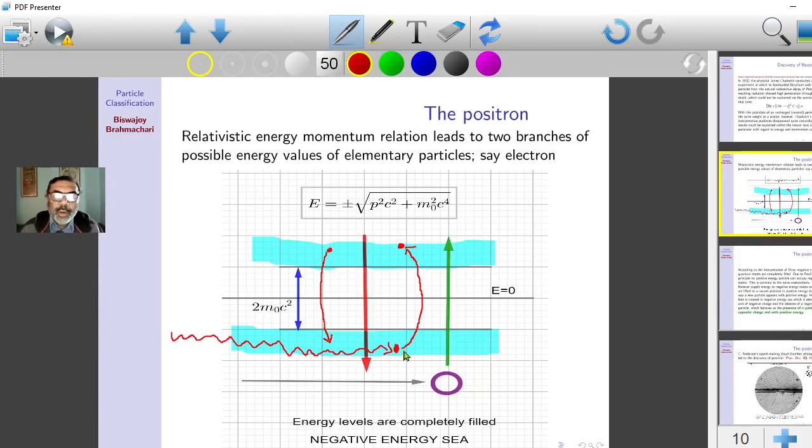A new electron with positive energy has been created. So that is a new electron. And when you remove a negative energy electron from the negative energy sea, it is equivalent to...